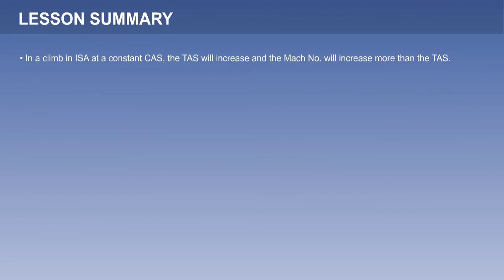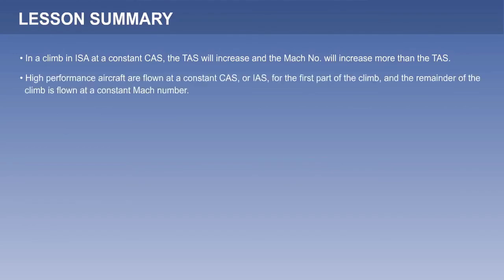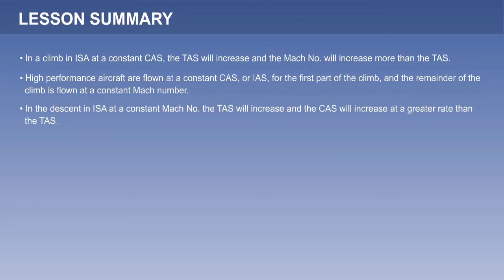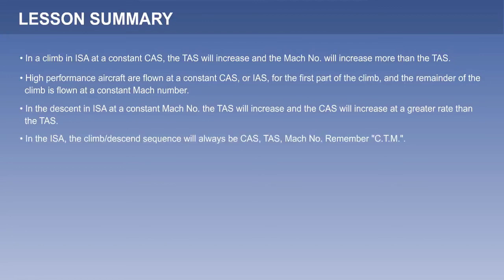Here are the main points of the lesson. In a climb in ISA at a constant CAS, the TAS will increase, and Mach number will increase more than the TAS. High-performance aircraft are flown at a constant CAS, or indicated airspeed, for the first part of the climb, and the remainder of the climb is flown at a constant Mach number. In the descent in ISA at a constant Mach number, the TAS will increase, and the CAS will increase at a greater rate than the TAS. In the ISA, the climb-descend sequence will always be CAS, TAS, Mach number — remember, C-T-M.